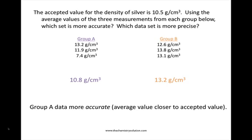The average value derived from group B's data, 13.2 grams per centimeter cubed, is not very accurate because it deviates significantly from the accepted value for the density of silver, which is 10.5 grams per centimeter cubed.